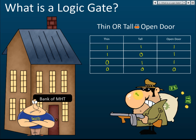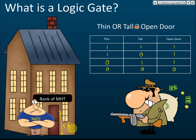There's now a problem — too many customers going in and out, and they're not happy with a security guard standing there. So the bank manager decided to replace the security guard with a logic gate system. He put a sensor at the entrance, five feet from the ground. Lower than five feet is considered short; higher than five feet is considered tall.